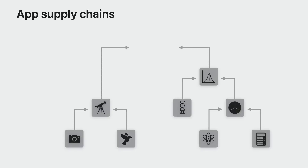Apps are developed using a range of SDKs — for example, the iOS SDK. Some are made by Apple, some by app developers to use across all of their apps, and some that app developers obtain from other sources. These form the app's supply chain and can include frameworks, Swift source files, and other types of dependencies.